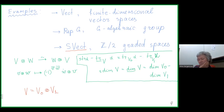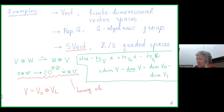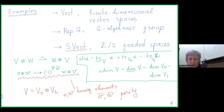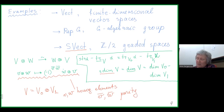The main difference with the category of vector spaces is that the braiding isomorphism between V⊗W and W⊗V is given by a formula that on homogeneous elements introduces a sign: v⊗w ↦ (-1)^{v̄·w̄} w⊗v. The dimension defined from the categorical point of view is called superdimension, given by dim(V₀) − dim(V₁), and the supertrace is the difference of traces on the even and odd parts.